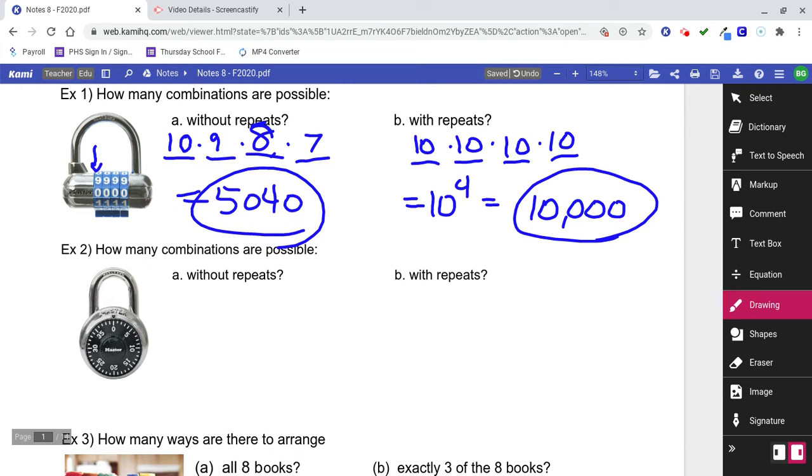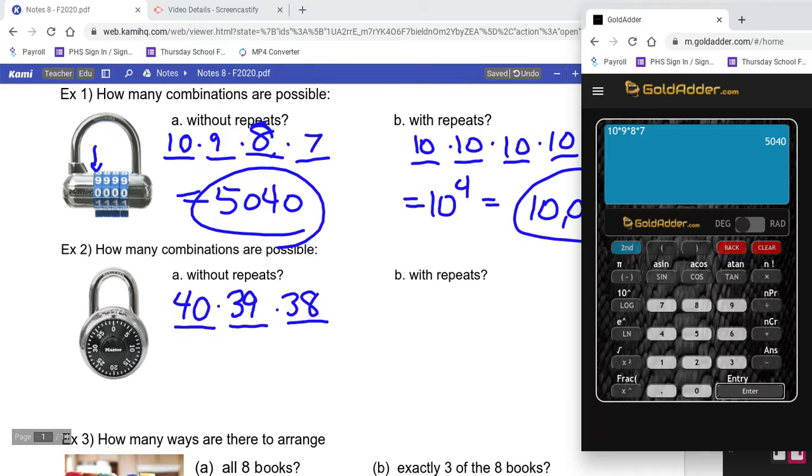Example 2 is a different kind of lock - you've all seen this lock before. This kind of lock usually has three numbers. If you look at this specific one, how many digits are there on the dial? 40, from 0 to 39. So without repeats, your first blank, you'd have 40 numbers to choose from, and then 39, and then 38. That's 40 times 39 times 38, which equals 59,280.